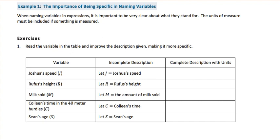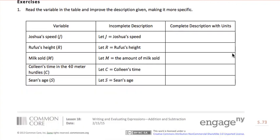We're going to explore the importance of being specific in naming variables. When you're naming variables in expressions, it's important to be very clear about what they stand for. The units of measure must be included if something is being measured. We'll read the variable in the table and improve the description given, making it more specific.